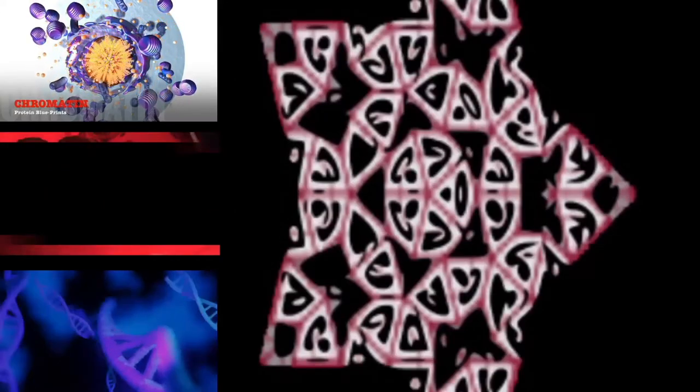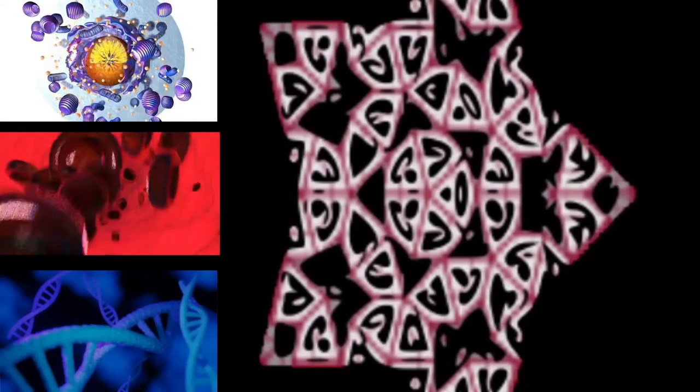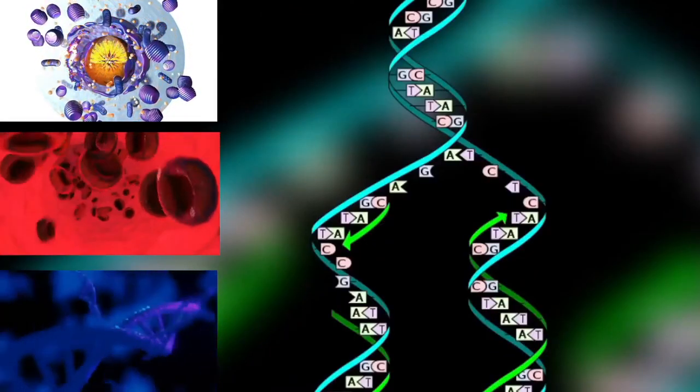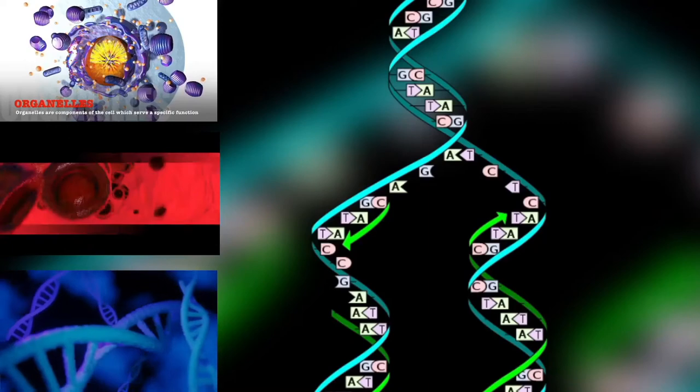The main remaining controversies are the root and the exact positioning of the Rhodophyta and the bikonts Rhizaria, Haptista, Cryptista, Picozoa, and Telonemia, many of which may be endosymbiotic eukaryote-eukaryote hybrids.